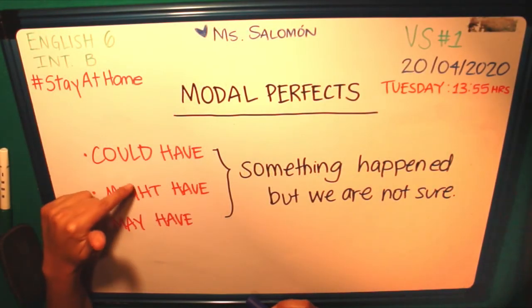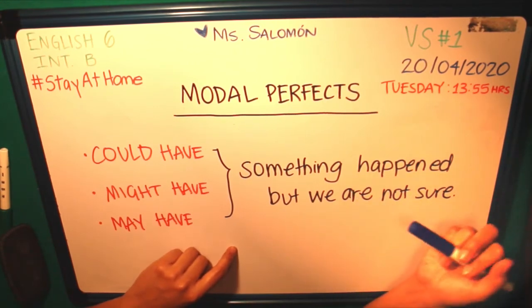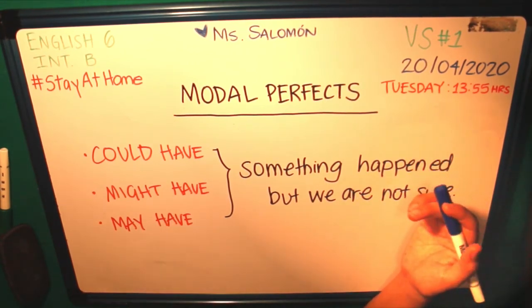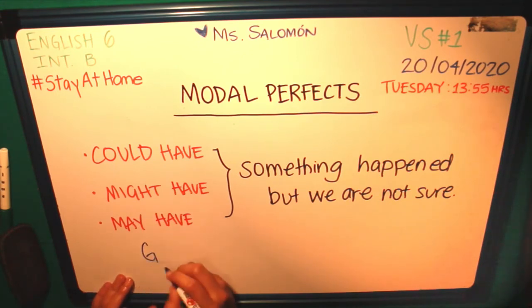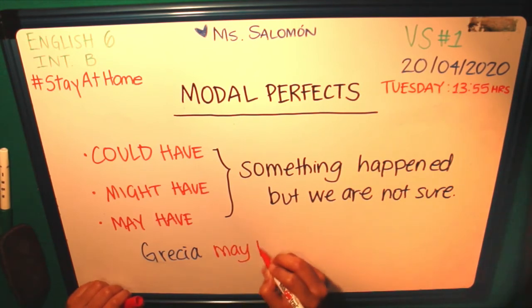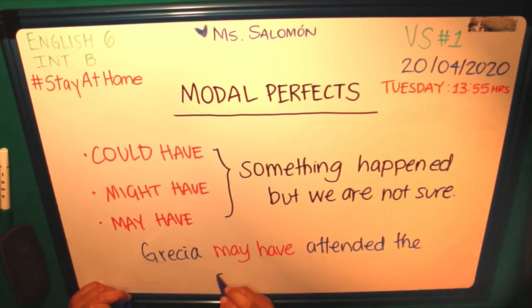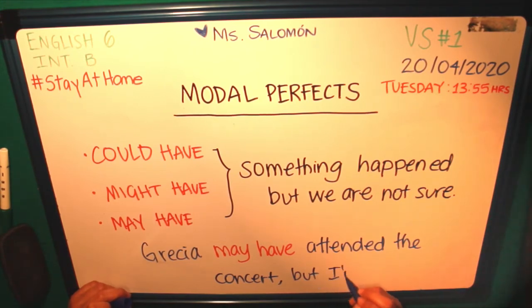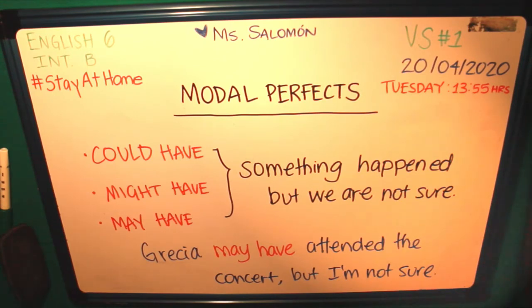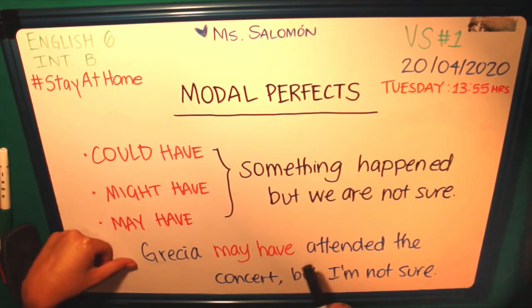We use 'could have,' 'might have,' and 'may have' to express that something happened but we are not sure that it did. For example, we could say 'Grecia may have attended the concert, but I'm not sure.' What I'm saying is that it's possible that Grecia attended the concert, but I'm not committing to the truthfulness of this sentence.